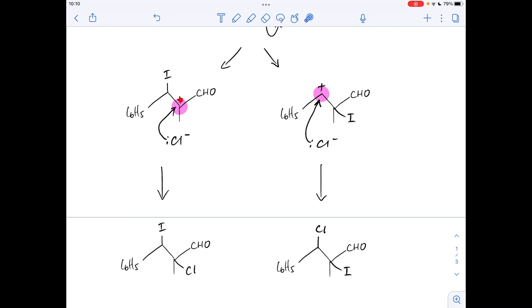So the one on the left, the carbon with the positive charge on is bonded to one, two, three carbons directly. So this is a tertiary carbocation. This one, we've got one, two carbons bonded directly to the positive carbon. So the one on the right is a secondary carbocation.